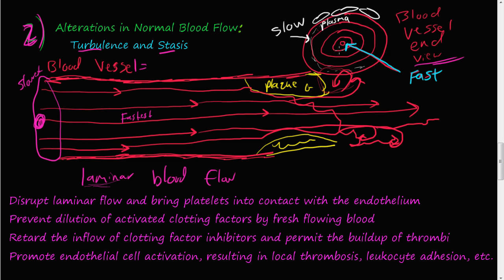So turbulence and stasis can disrupt laminar flow and bring platelets into contact with the endothelium. Like I said, these platelets are here in the center. If you get this turbulent blood flow with the blood going all around, these platelets are bumping up against this endothelium. And that can cause the coagulation cascade.